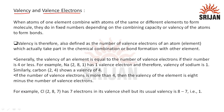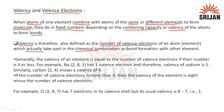Valency and valence electrons: when atoms of one element combine with atoms of the same or different elements to form a molecule, they do so in fixed numbers depending on the combining capacity — or simply the valency — of the atoms to form bonds. Valency is defined as the number of valence electrons of an atom or element which actually take part in chemical combination or bond formation. It is therefore a combining capacity.